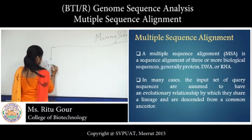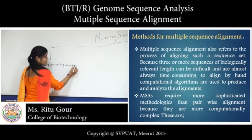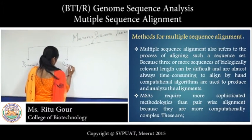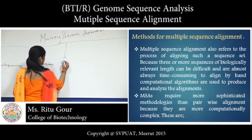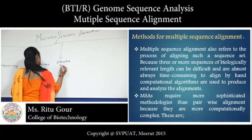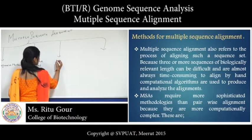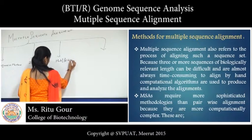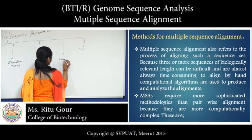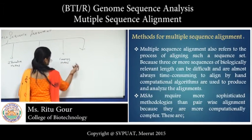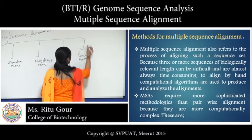There are main types of multiple sequence alignment. First is dynamic programming method, second is progressive method, third is iterative method, fourth is motif folding method, fifth is consensus method, sixth is genetic algorithm, and the last one is hidden Markov model.